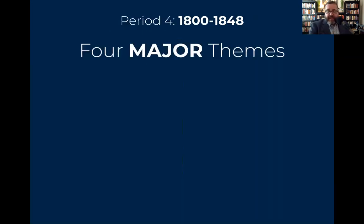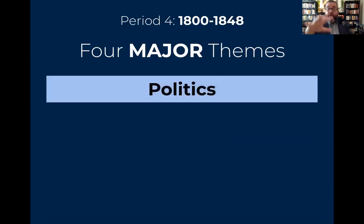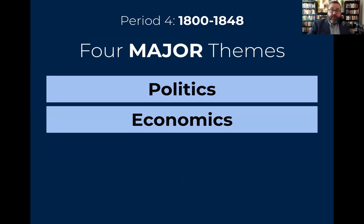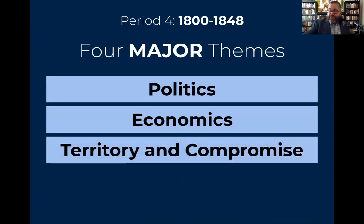I want to make Period 4 easy by dividing it into four basic themes. For Period 4 overall, we're going to look at politics under Jefferson and politics under Jackson. We're going to look at economics under Jefferson via Henry Clay's American System and the market revolution. Then economics under Andrew Jackson — the nullification crisis under the Tariff of Abominations of 1828, alongside the bank war and the subsequent Panic of 1837. We'll look at territory and compromise — Jefferson's Louisiana Purchase coupled with anything west of the Rocky Mountains under Andrew Jackson, and James K. Polk's acquisition of the Southwest Territories, along with Oregon and Texas.